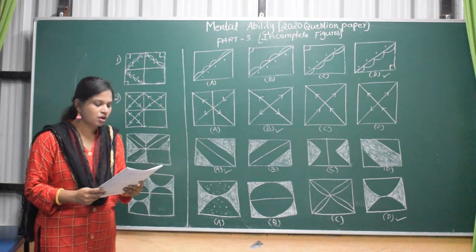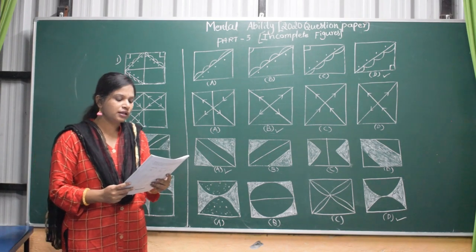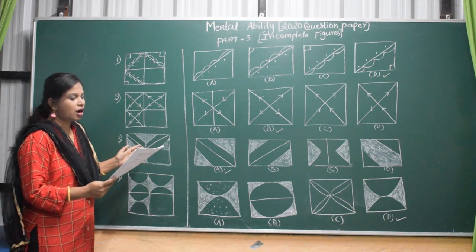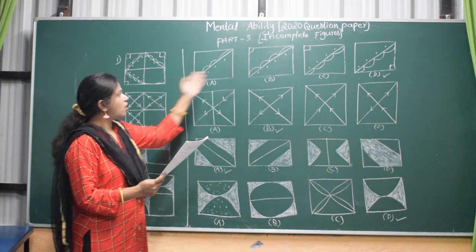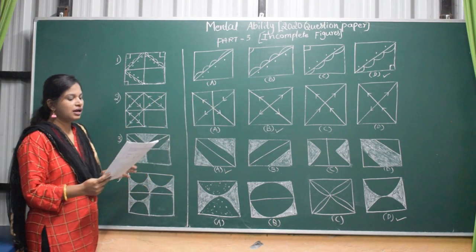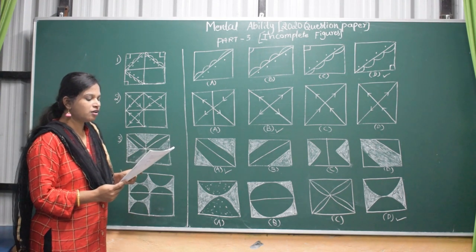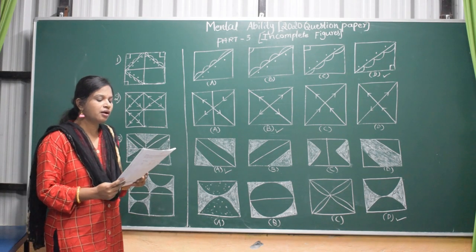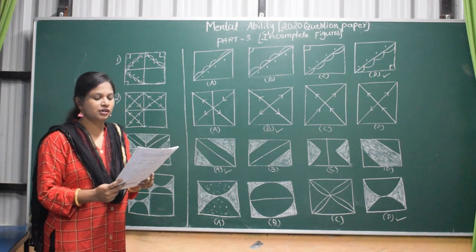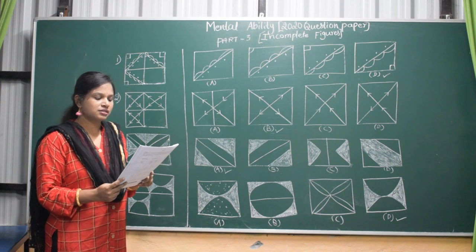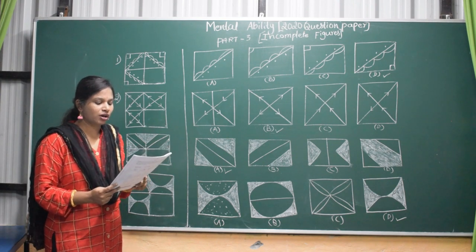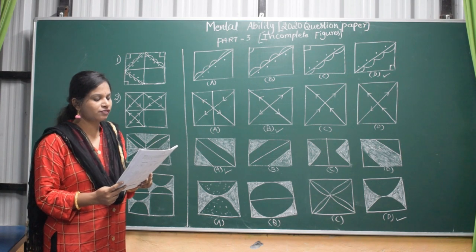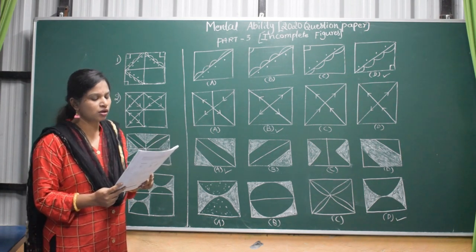So first I will read the question. In question number 1 to 4, there is a question figure on left side, a part of which is missing. Observe the answer figures A, B, C and D on the right side and find out the answer figure which without changing the direction fits in the missing part of the question figure in order to complete the pattern. Indicate your answer by darkening the circle in OMR answer sheet against the number corresponding to the question.